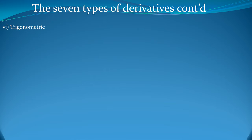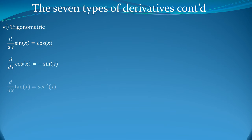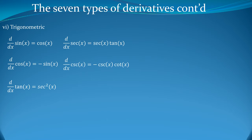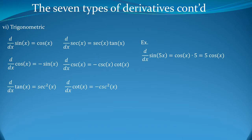Now for trigonometric functions. The derivative of sine is cosine. The derivative of cosine is negative sine. The derivative of tangent is secant squared. The derivative of secant is secant·tangent. The derivative of cosecant is negative cosecant·cotangent. And the derivative of cotangent is negative cosecant squared. For example, the derivative of sin(5x) equals cos(5x) times 5, or 5cos(5x).